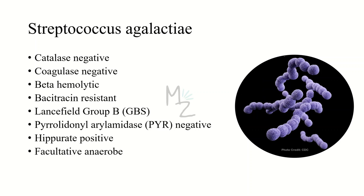Streptococcus agalactiae is catalase negative. Catalase is an enzyme released by certain bacteria but not by others — streptococcus being one that does not release the catalase enzyme. Streptococcus agalactiae is also coagulase negative. This bacterium is beta hemolytic, is bacitracin resistant, and belongs to Lancefield group B classification. If you see GBS written somewhere, it definitely means group B strep.